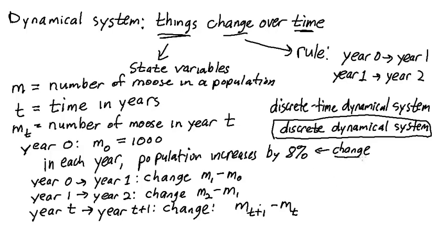Now what do we want that change to be? We want it to be an increase of eight percent. Well, okay, so eight percent of what? We want it to be eight percent of M sub t, because that's the population size we started with. So we want the change from M times t to t plus one to be eight percent of M sub t, which is 0.08 times M sub t. And that is our dynamical rule: the change is 0.08 times M sub t, and that's our